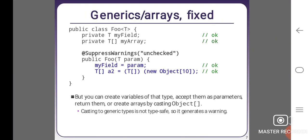Generic arrays are fixed: public class Foo<T> { private T myField; private T[] myArray; @SuppressWarnings("unchecked") public Foo(T param) { myField = param; // ok T[] array2 = (T[]) new Object[10]; // new array of 10 } } But you can create variables of the type, accept them as parameters, return them, or create arrays by casting object. Casting to generic type is not type safe, so it generates warning.